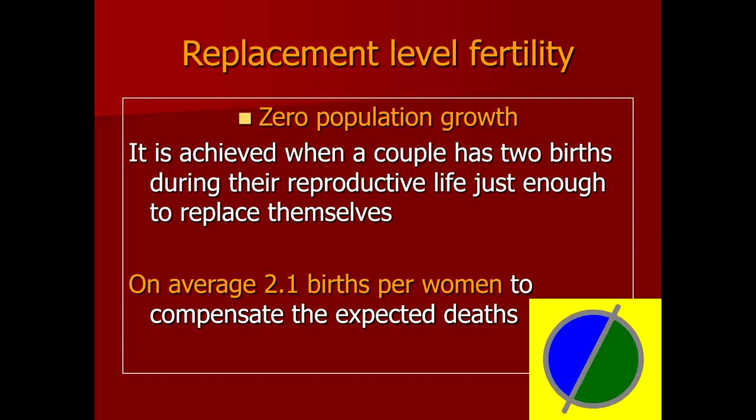Two adults are replaced by two children — one male and one female — so there is zero population growth. Zero population growth cannot be attained unless we reach replacement level fertility. For attaining replacement level fertility, on average 2.1 births per woman are required. The 0.1 provides an extra margin to replace deaths occurring in children under five years of age.